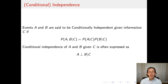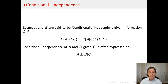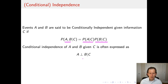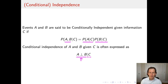For the brief review: if we have events or random variables A and B, they are said to be conditionally independent given some kind of information C if it's the case that the joint distribution of A and B given C can be rewritten as the product of the marginal distributions of A given C and B given C. We often write this as A is conditionally independent from B given C, where this upside-down T is read as 'conditionally independent from' and the bar is just 'given' as in ordinary probability.